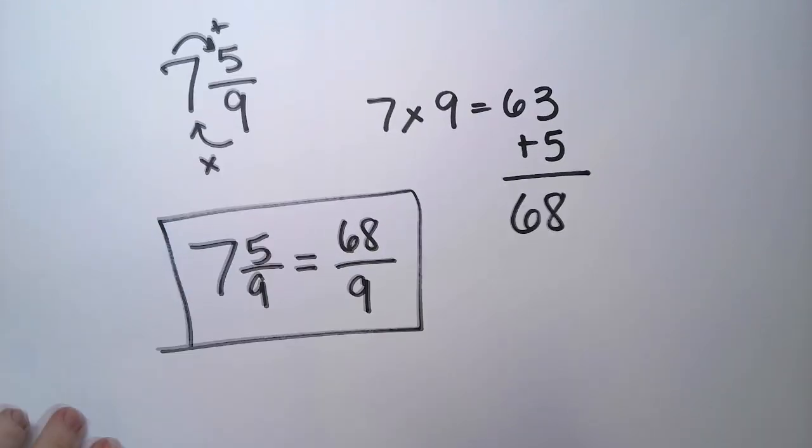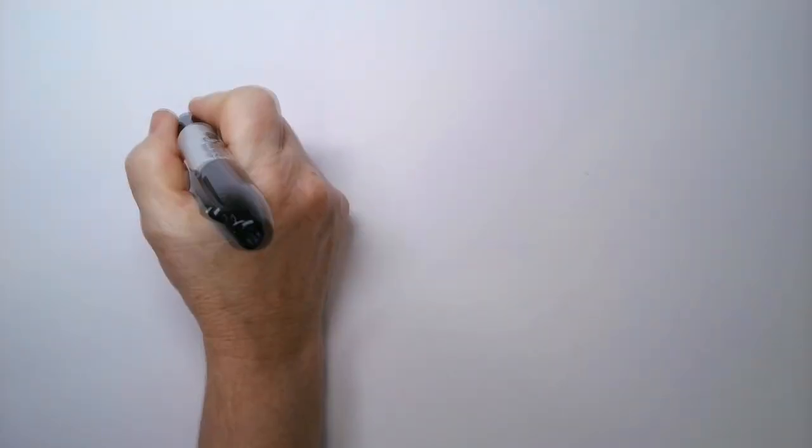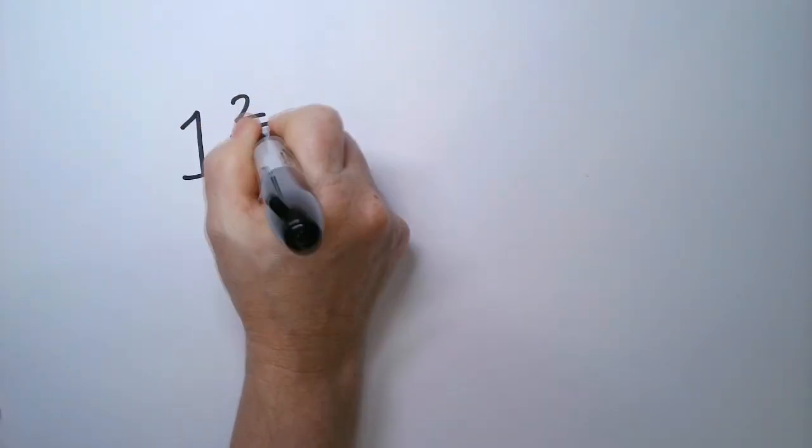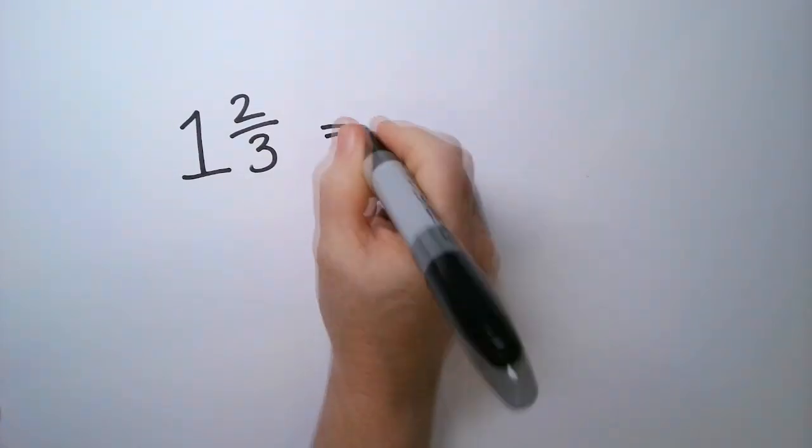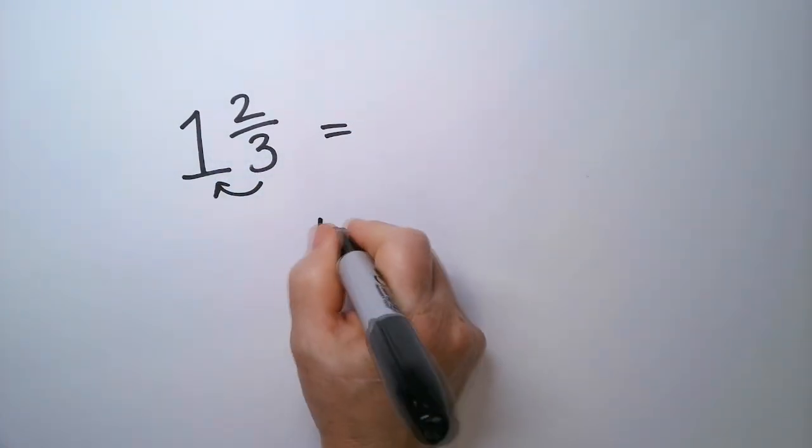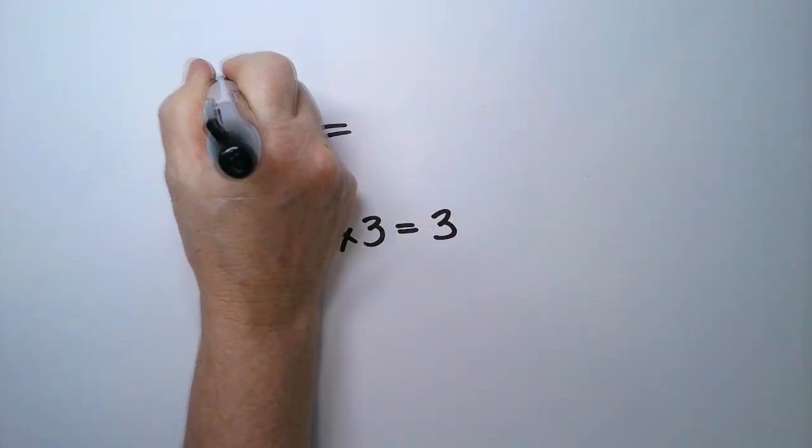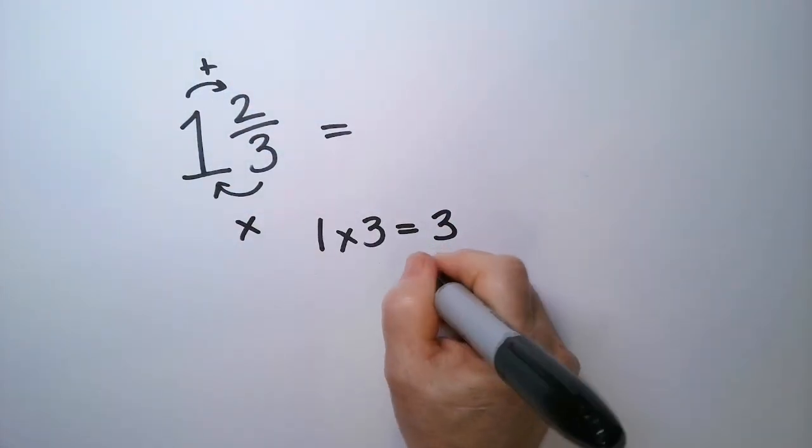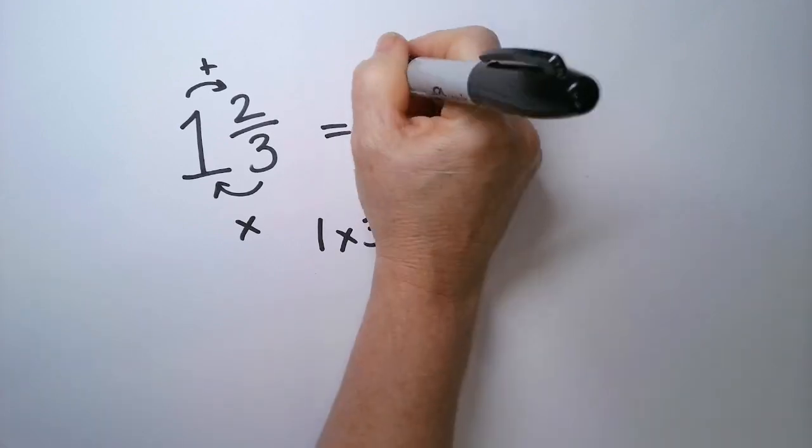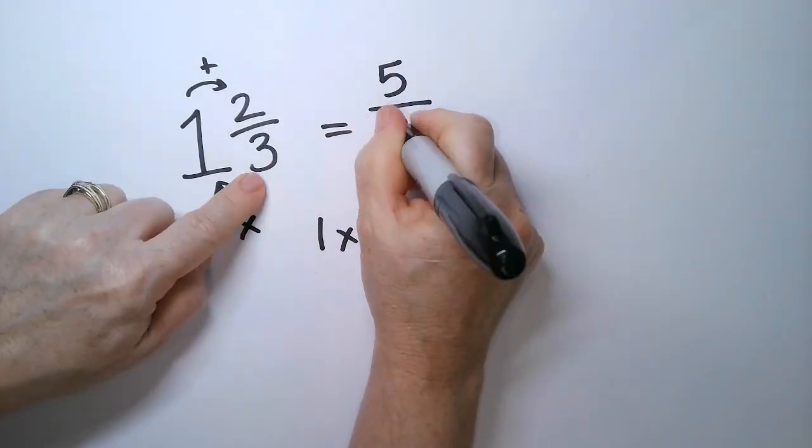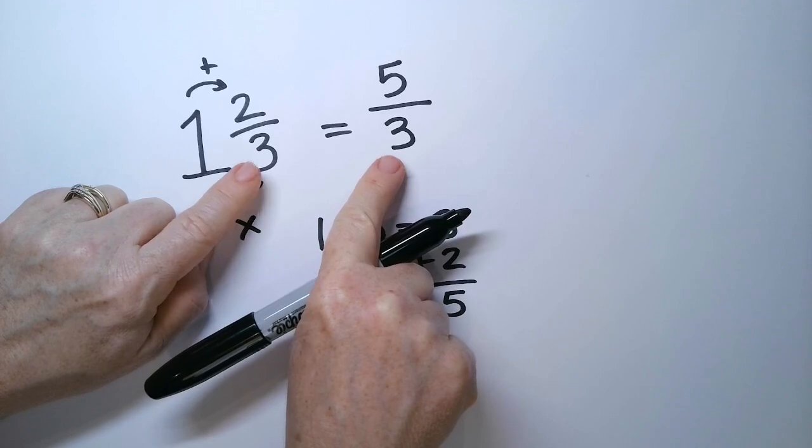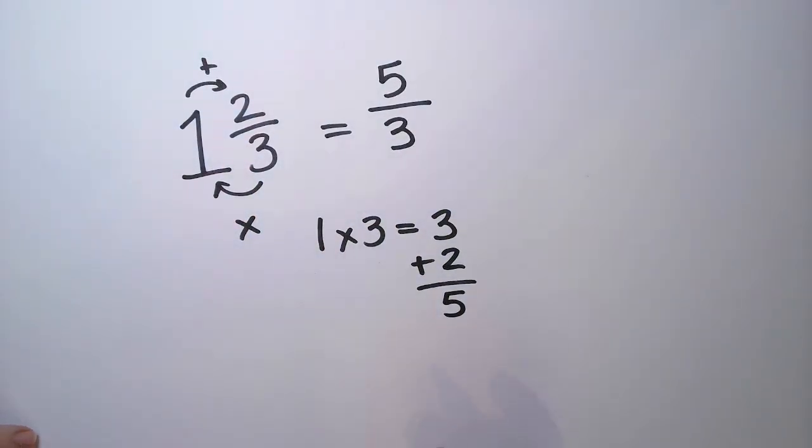Let's do another one. Let's say I have 1 and 2 thirds. Okay? 3 times 1 is 3, and we're going to add the 2. So, the numerator is going to be 5. Notice the denominator stays the same in both cases. That's because we're not changing the number of divisions.